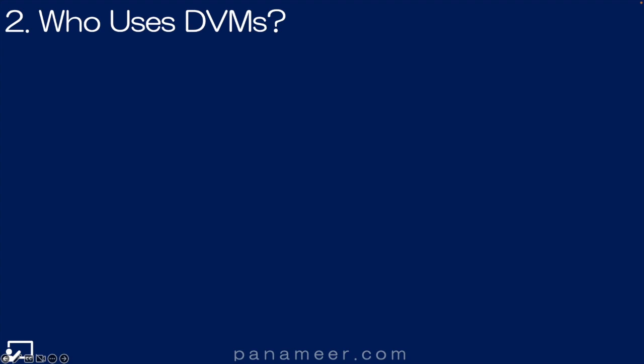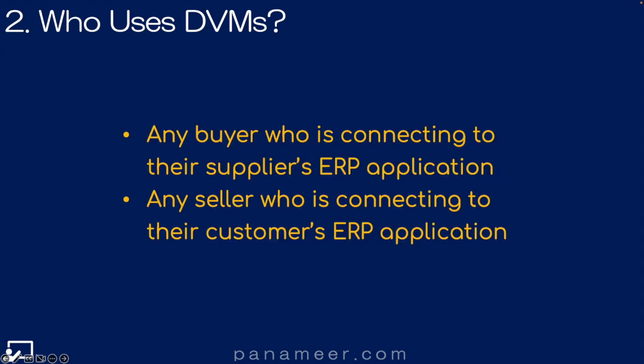Slide two: who uses DVMs? Any buyer who is connecting to their supplier's ERP application, and any seller who is connecting to their customer's application. As a general rule of thumb, if you are connecting to and taking data from a third party, you need to do the mapping. Meaning that I don't necessarily have to map the data back when I give it to an intermediary OBN to give it to you, being my supplier.